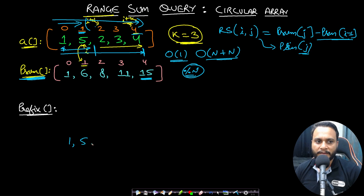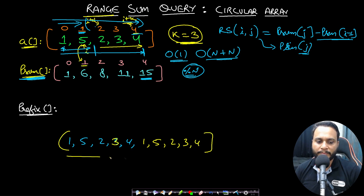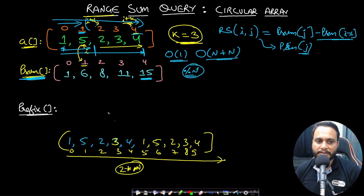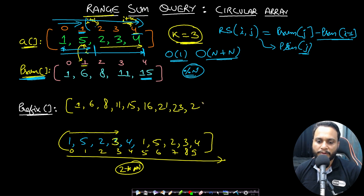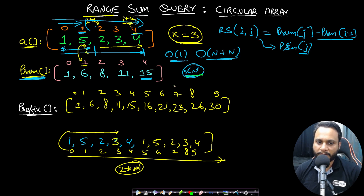To handle the circular property without using modulo, I'll create a prefix sum array of size 2n by imagining the array [1, 5, 2, 3, 4] is appended with itself. With indices 0 through 9, the prefix sum values computed left to right are: 1, 6, 8, 11, 15, 16, 21, 23, 26, 30. With this doubled array, circular wrapping is naturally handled — we don't need mod n.